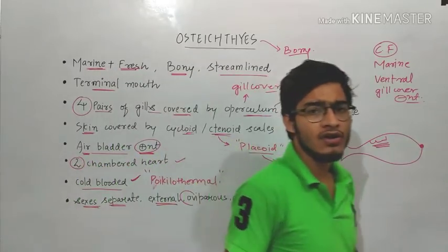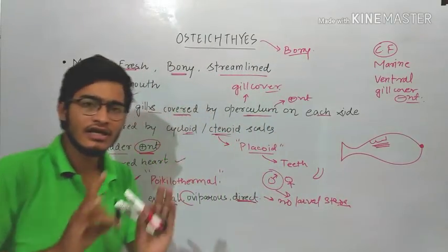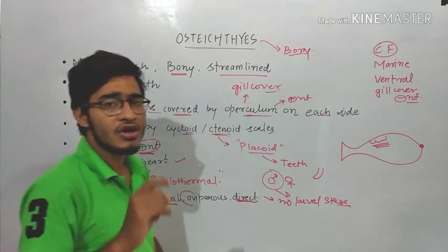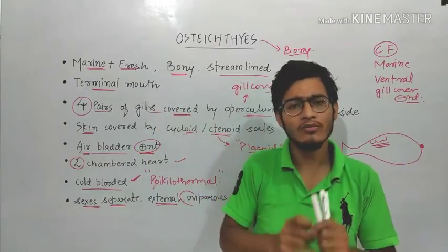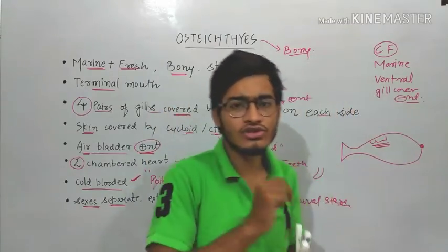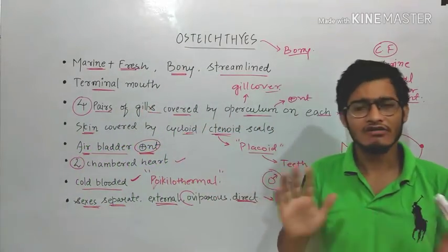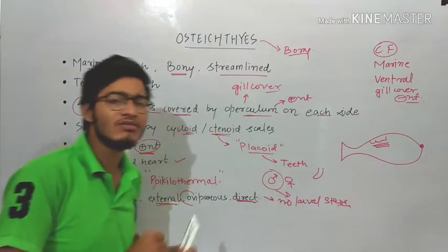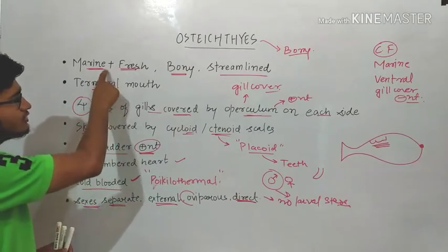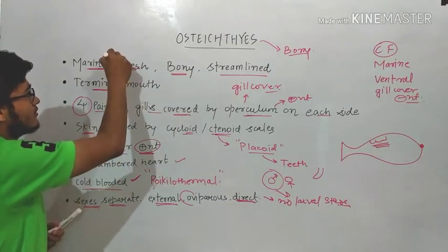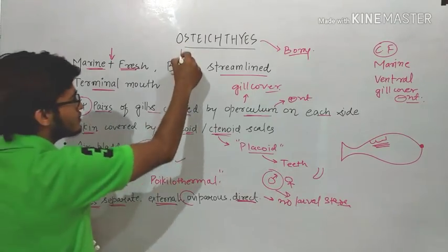These are some important characters of bony fishes. You have to learn all the characters in the form of similarities and differences. The similarities include: body is streamlined in both cases, both are cold-blooded, both have a two-chambered heart, and both have separate sexes. The differences include: bony fishes are marine plus freshwater, while cartilaginous fishes are only marine.